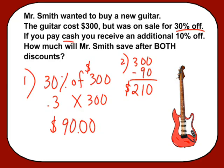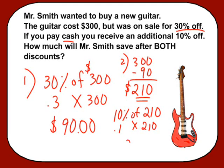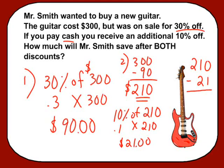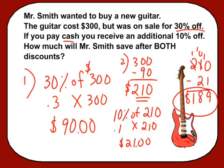However, if you pay in cash, you get an extra 10% off. So 10% of that discounted price of $210 — multiply 0.10 times $210 — gives an additional $21 off. Take the discounted price of $210 and subtract the additional $21, and the final cost of that guitar after the two discounts would be $189. That's how you calculate discounts — you can do it in either one or two steps.